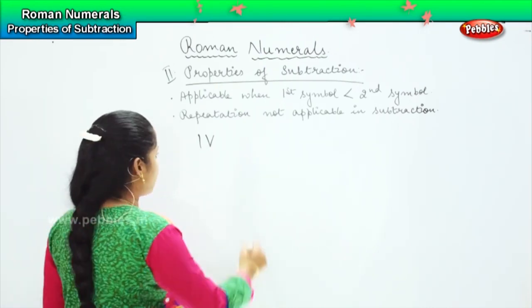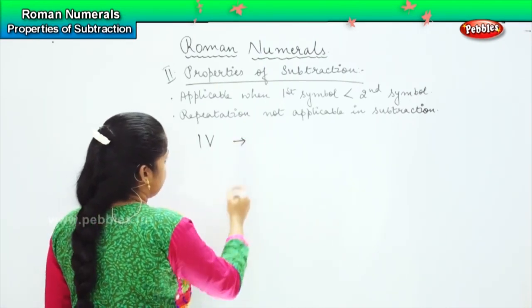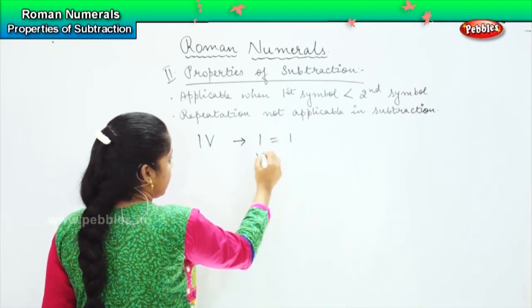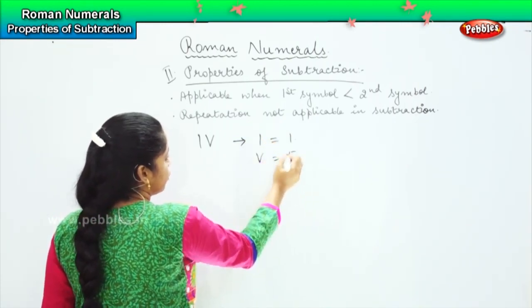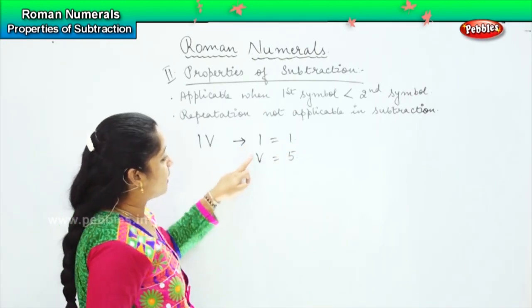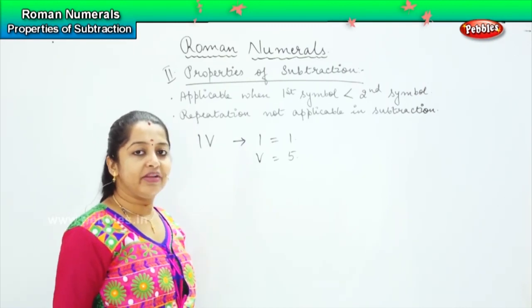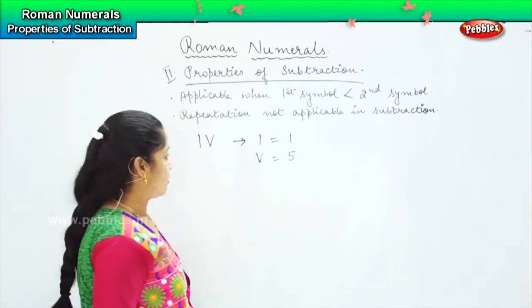V comes second, so this will be read as I equals 1 and V equals 5. So my first symbol is lesser than the second symbol, which means that I will be doing a subtraction.